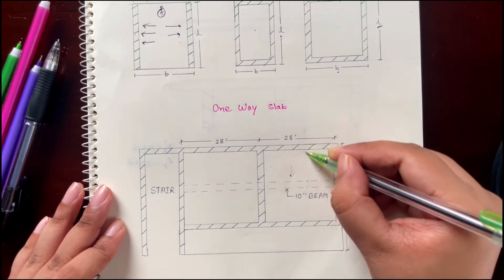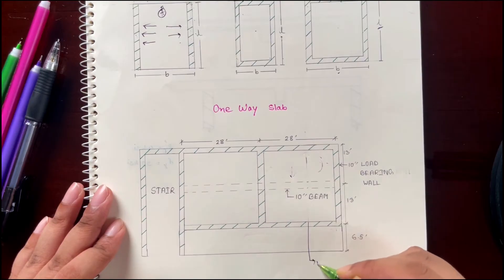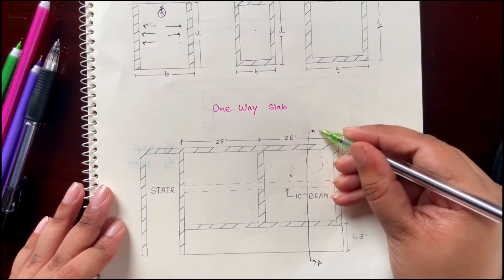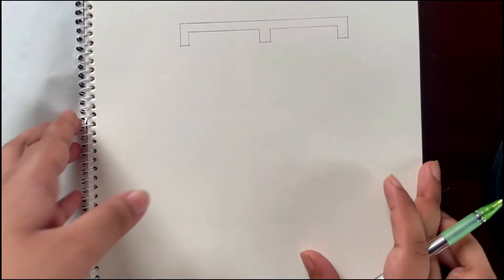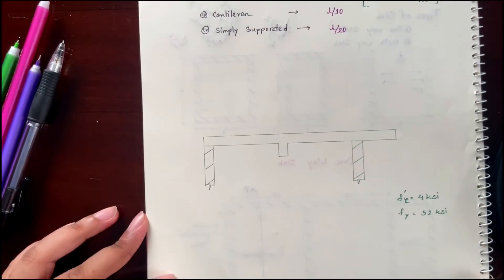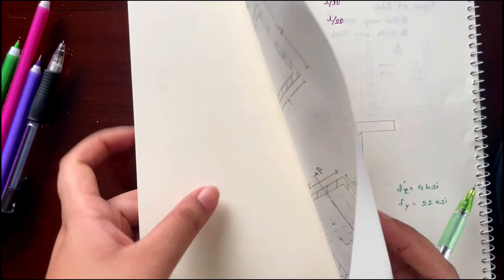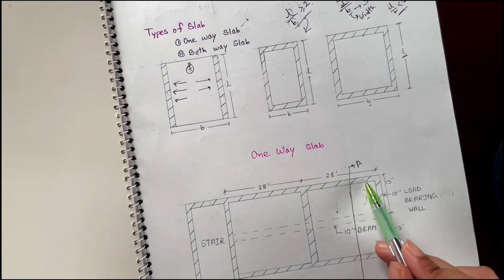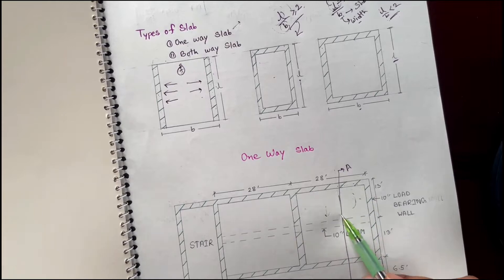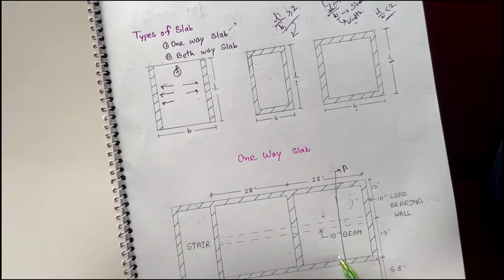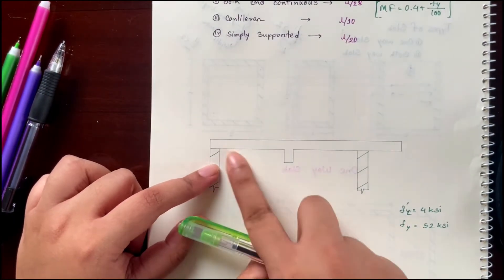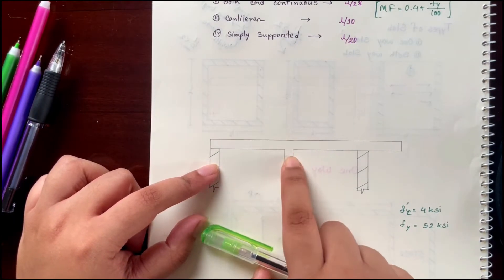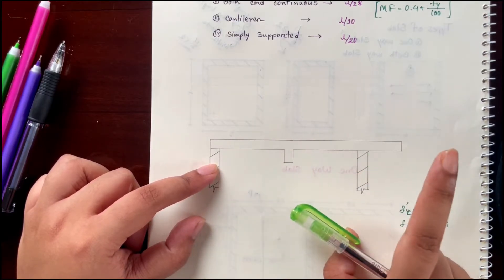If we take a section here and look at the sectional view, it will look like this: first there is our load-bearing wall, then here is the slab, then a beam, then the slab again on the other side with the beam, then slab, then load-bearing wall, and then the cantilever portion.